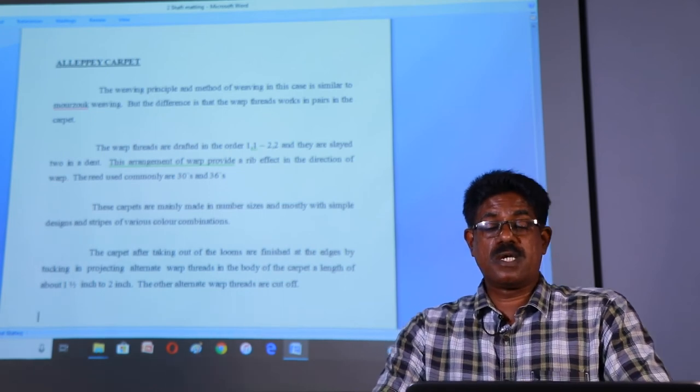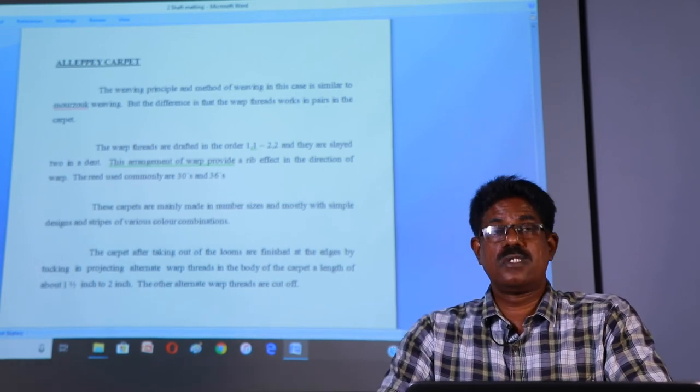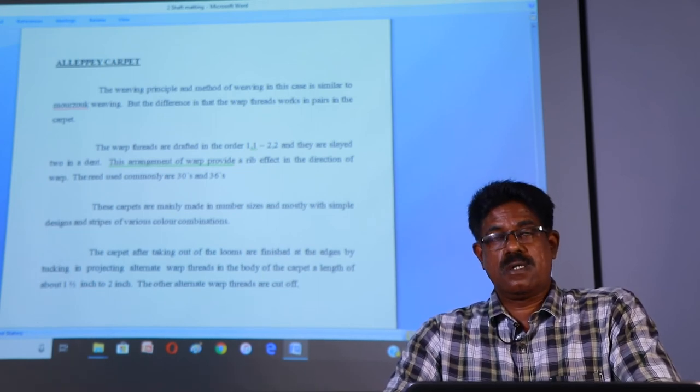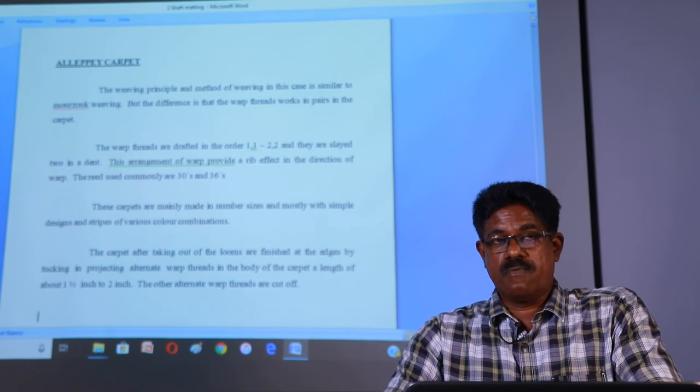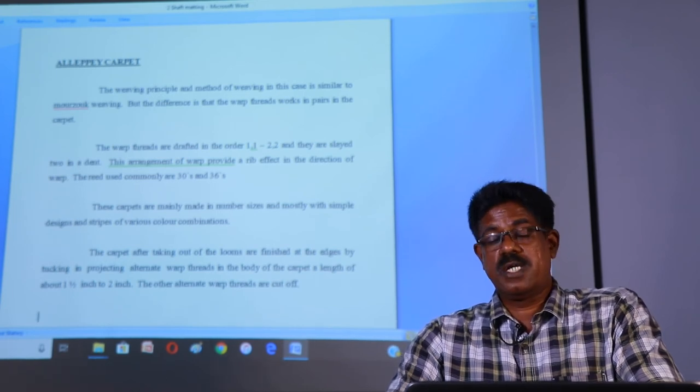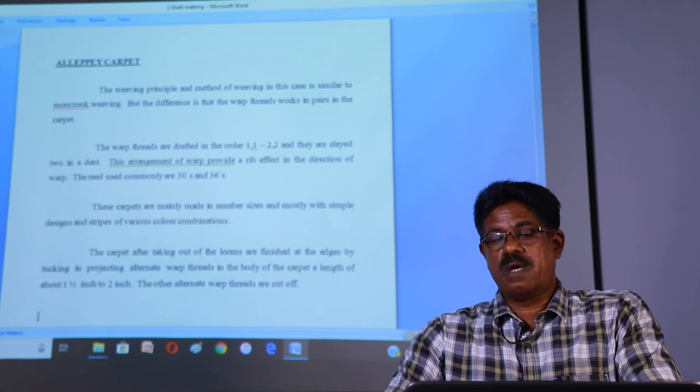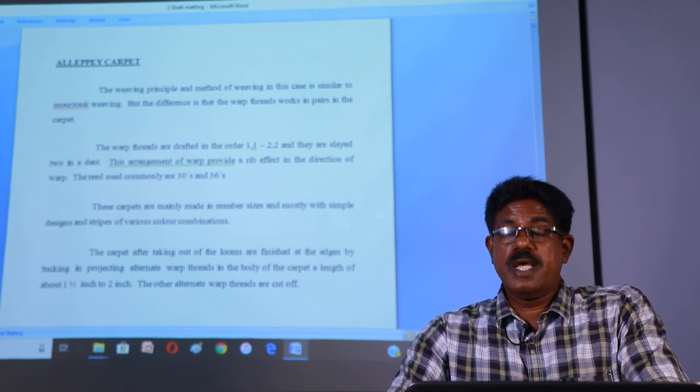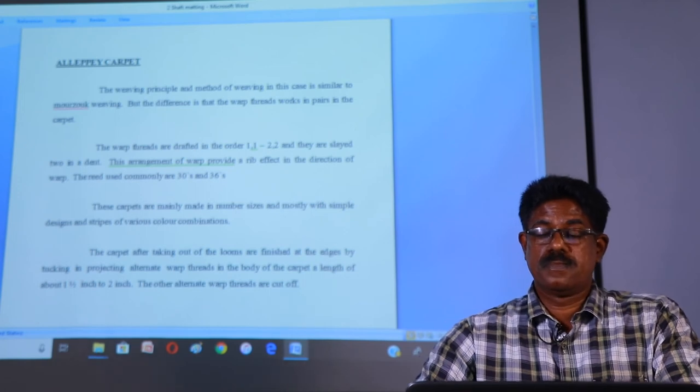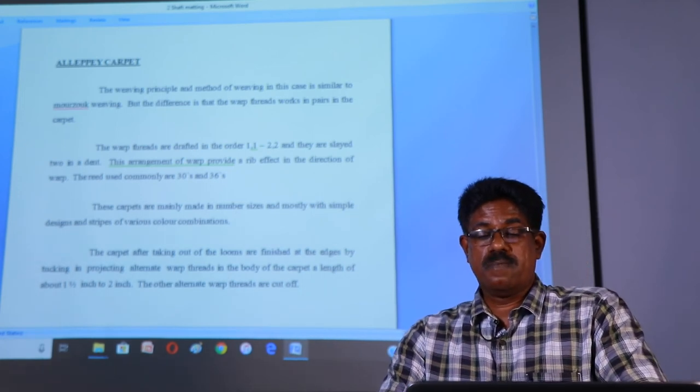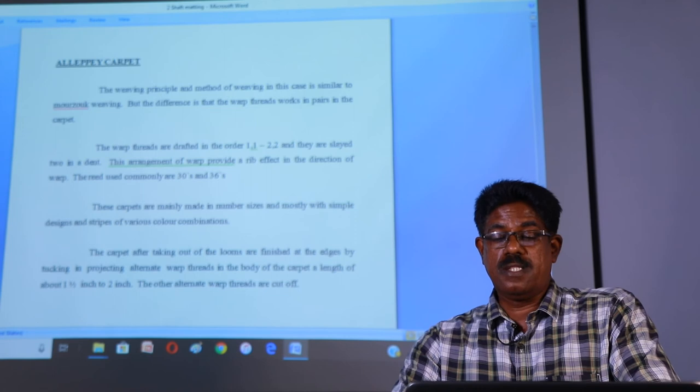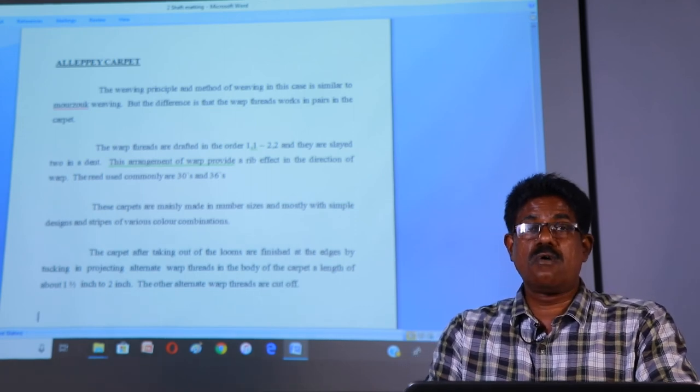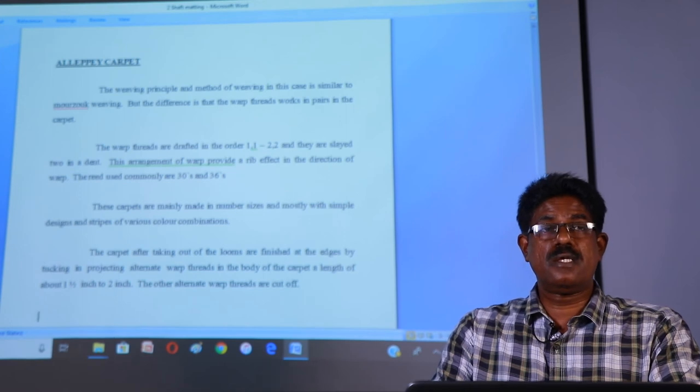The warp threads are drafted in the order 1122. That is, the first two warp threads are drafted in the first hurdle frame and the third and fourth warp threads are drafted to the second hurdle frame. And they are sleyed two in a dent. These arrangements of warp provide a rib effect in the direction of warp. The reed used commonly are thirties.